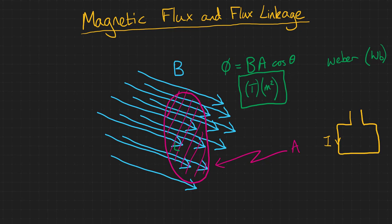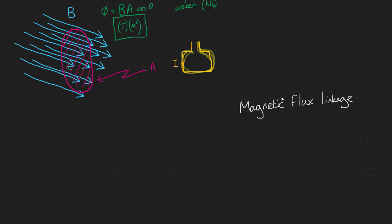But what if instead of a single coil of wire, we wound multiple loops? This would have the effect of multiplying the effect of this magnetic flux. And we account for this with a concept called magnetic flux linkage. To calculate magnetic flux linkage, we simply multiply magnetic flux by the number of turns on the coil, n.